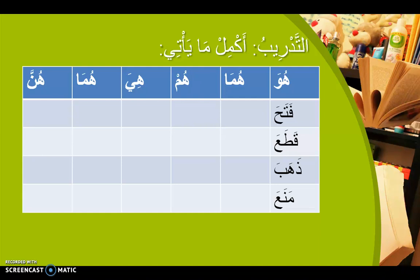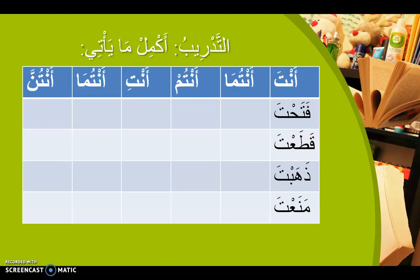After the exercise: أَكْمِلْ مَا يَأْتِي (akimil ma ya'ti) - accurately complete the following. أَكْمِلْ is an amr (commandment) because the last letter carries sukun. Complete the following for فَتَحَ, قَطَعَ, ذَهَبَ, and مَنَعَ. أَنْتَ فَتَحْتَ - you have opened. أَنْتَ قَطَعْتَ - you have cut. أَنْتَ ذَهَبْتَ - you have gone. أَنْتَ مَنَعْتَ - you have forbidden. Now conjugate for أَنْتُمَا, أَنْتُمْ, أَنْتِ, أَنْتُمَا (feminine), أَنْتُنَّ.